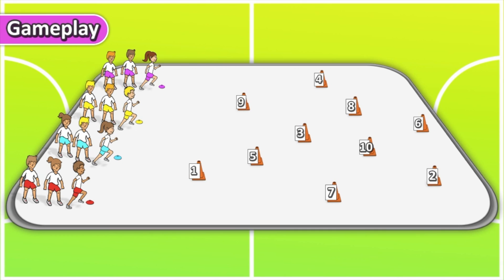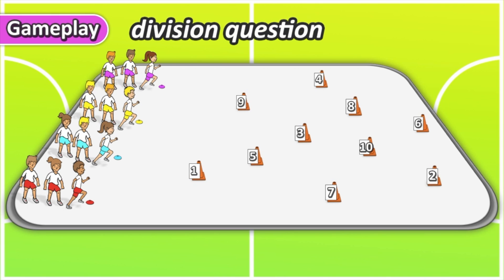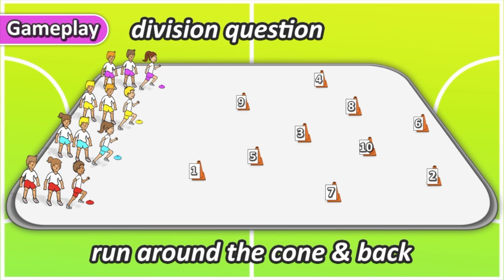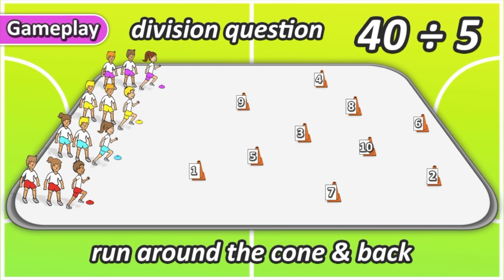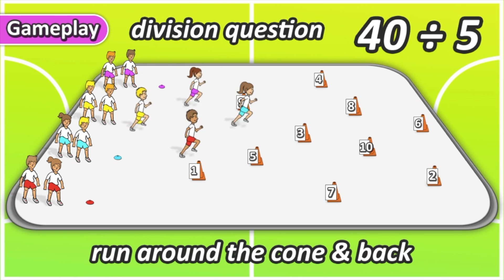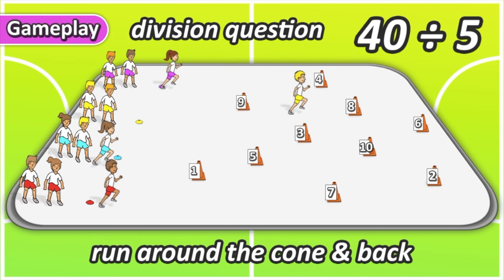To play this game it's very simple. Your teacher is going to call out a division question. You have to work out the answer to that question and run around the cone which has that answer number. So for example, if the teacher calls out 40 divided by 5, the answer would be 8, and the first player in each team would quickly work that out, run around cone number 8 and come back to their team.